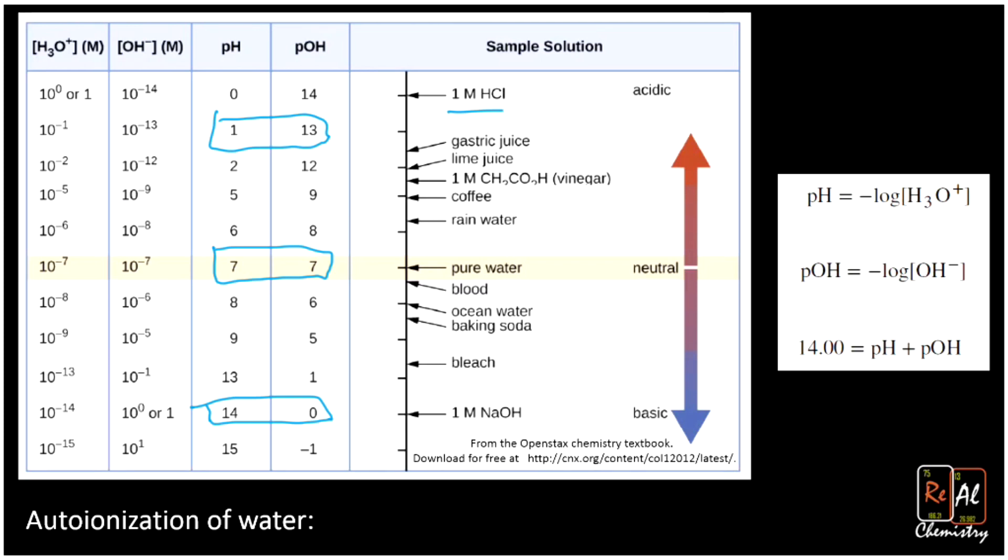One question that often comes up here is if you have pure water, just water all by itself, that's all H2O. So why do you have any hydronium ions or any hydroxide? And that's a good question. It turns out to have to do with something called the autoionization of water.